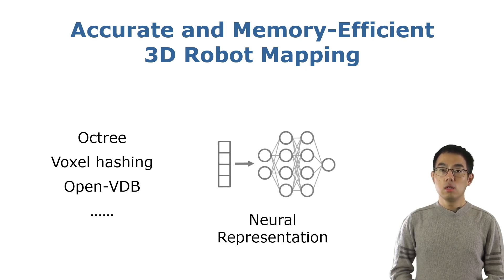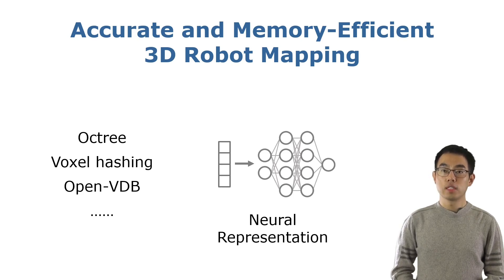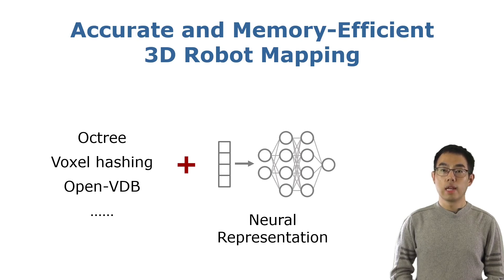Recently, neural representations attract a lot of attention. By implicitly storing geometric information in the neural network, these approaches can achieve remarkable accuracy and high-fidelity reconstructions with compact size. In this work, we are going to combine the neural representation and the Octree structure for large-scale 3D mapping for range sensors.